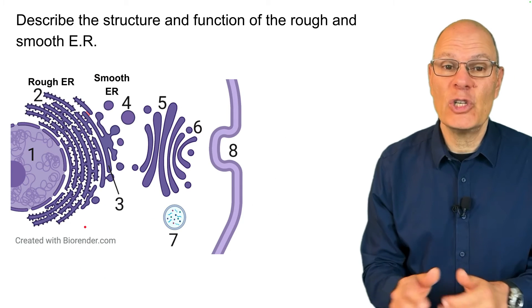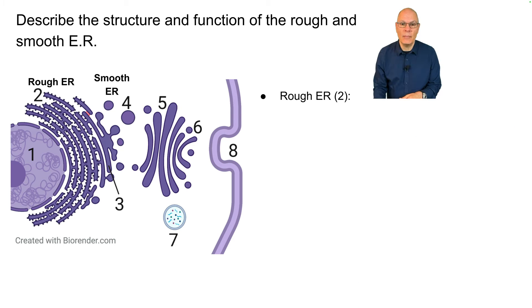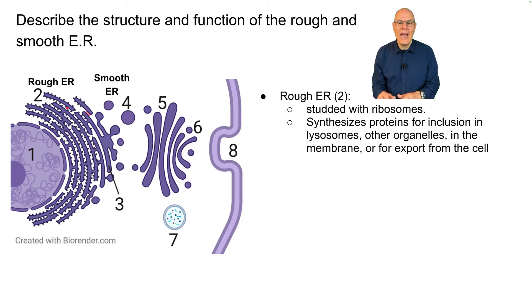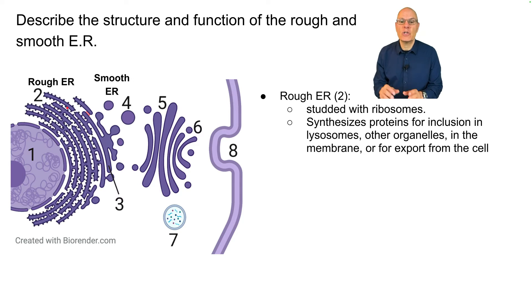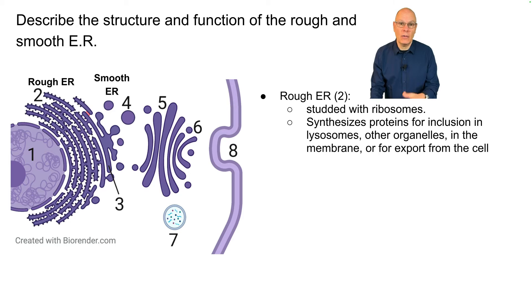The rough ER is studded with ribosomes — that's what all these little dots are over here. Using those ribosomes, the rough ER synthesizes proteins for inclusion in lysosomes, in other organelles, in the membrane, or for export from the cell.